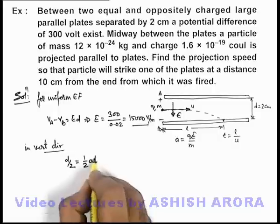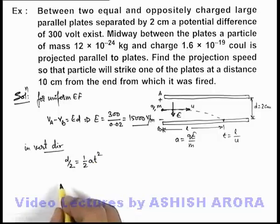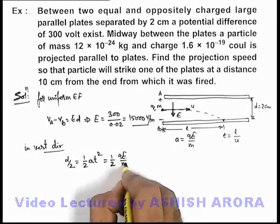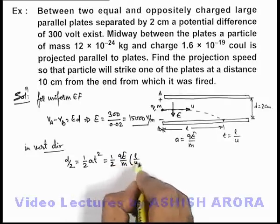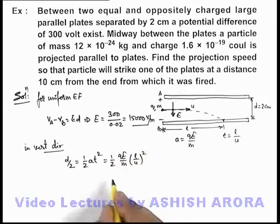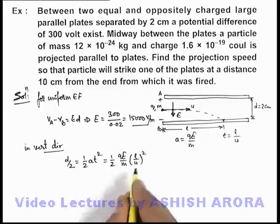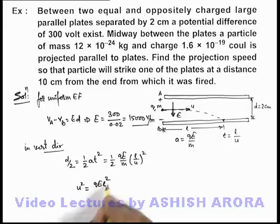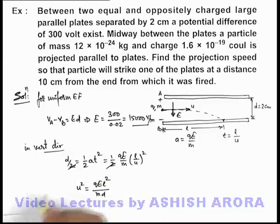If we substitute the values it will be (1/2)(qE/m)(L/u)². Then on solving the expression, we can get the value of u² to be equal to qEL²/md, as here this 2 gets canceled out.